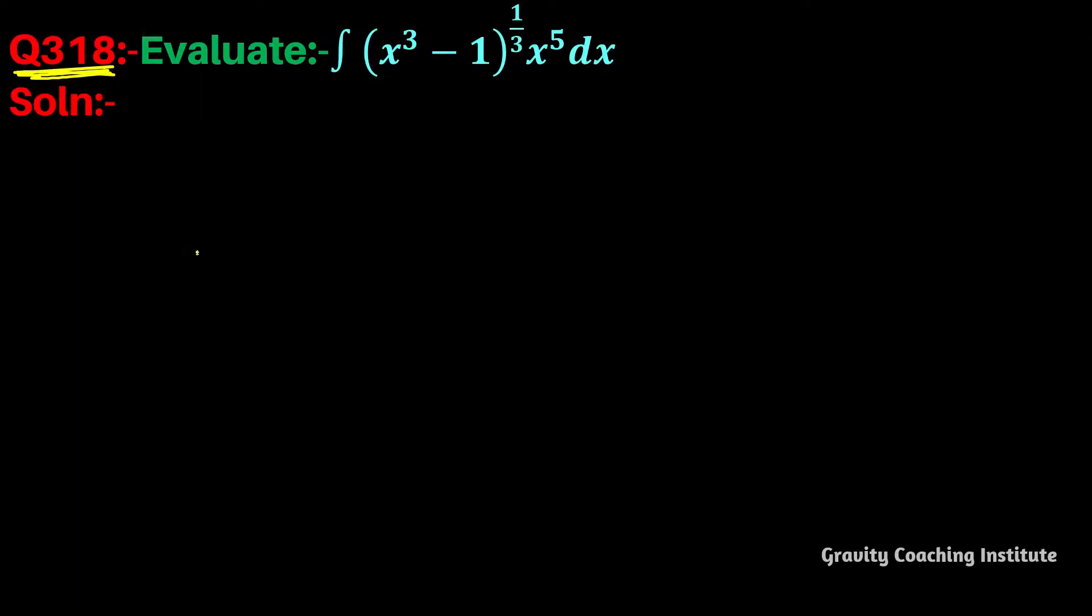Question number 318: Evaluate ∫(x³-1)^(1/3) * x^5 dx. First of all, let I = ∫(x³-1)^(1/3) * x^5 dx.